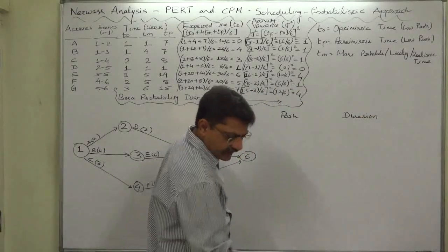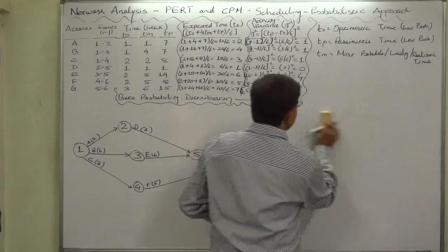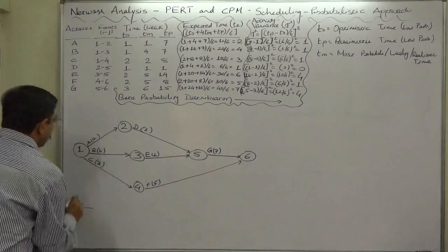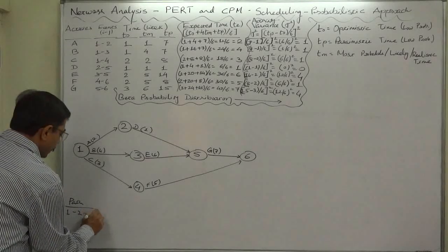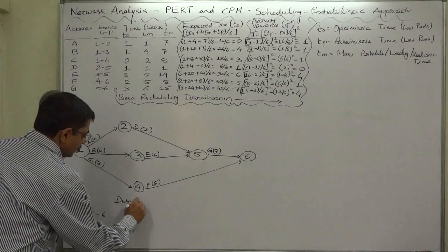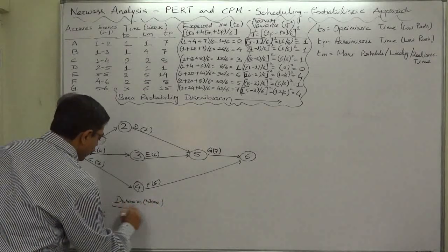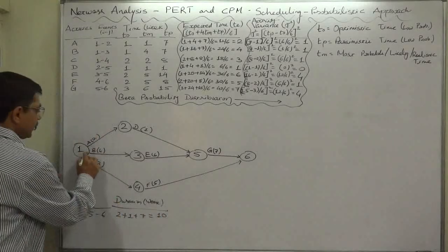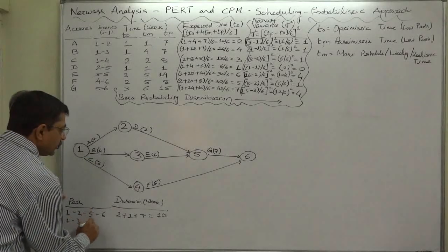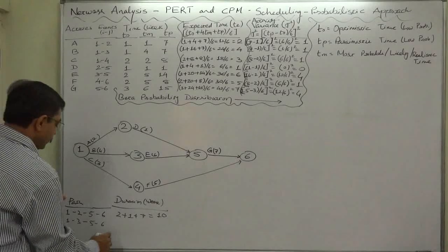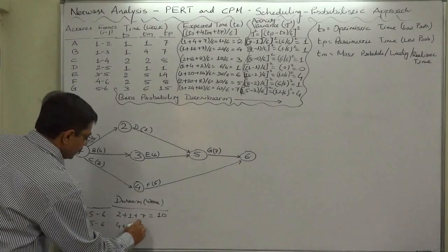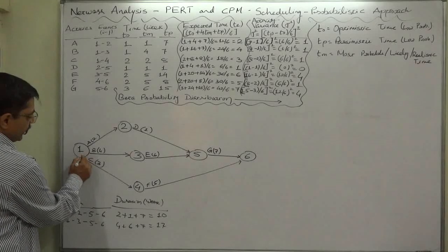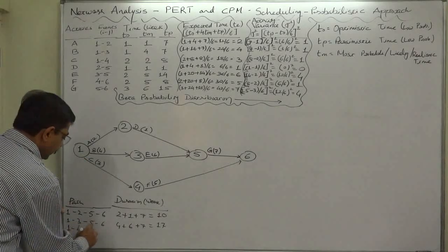I can write it at the bottom of the chart also. Path 1-2-5-6 duration in weeks will be 2 plus 1 plus 7 equals to 10 weeks. Another path is 1-3-5-6, the duration will be 4 plus 6 plus 7 equals 17. And the last path is 1-4-6, the duration will be 3 plus 5 equals to 8 weeks.